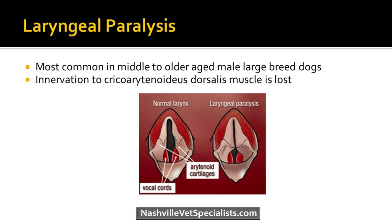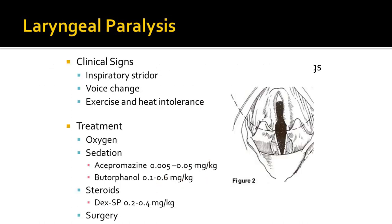Laryngeal paralysis occurs when there's damage to the cricoarytenoid dorsalis muscle, which normally abducts the larynx. When innervation to those muscles is lost, the cartilages collapse. When the pet gets into distress and tries to breathe more air in, it collapses even further — a perpetuating cycle. Clinical signs include inspiratory stridor, subtle voice change weeks before, and exercise and heat intolerance. These cases present a lot in summer or after swimming.